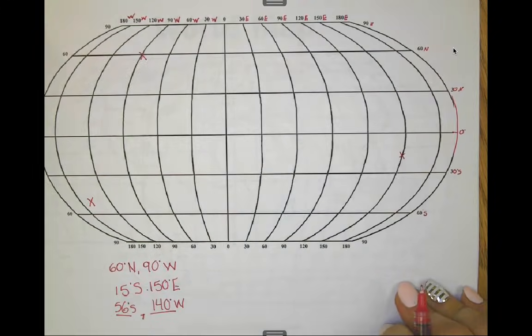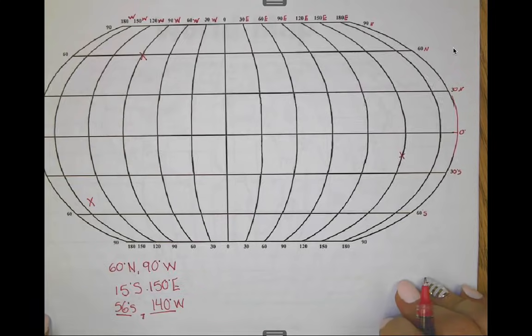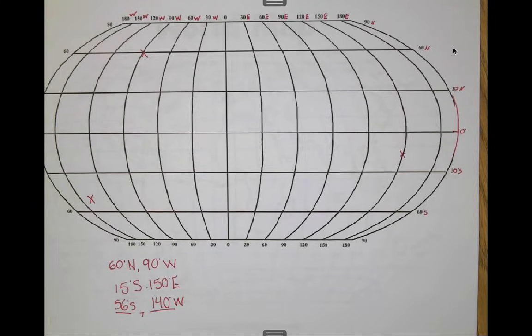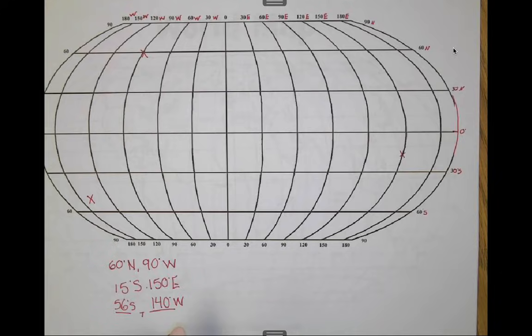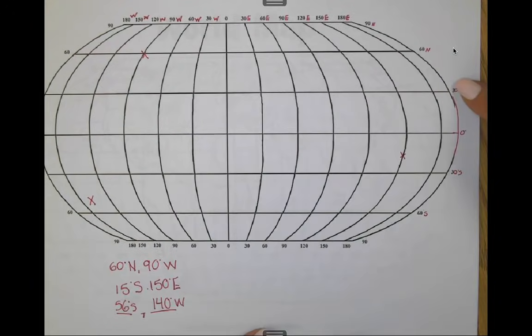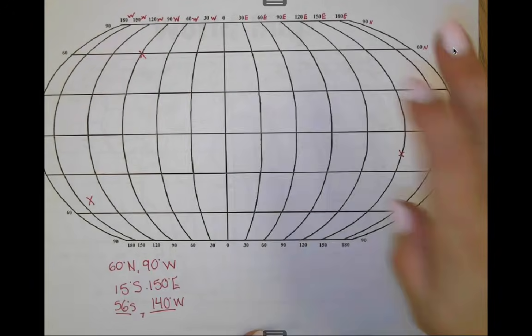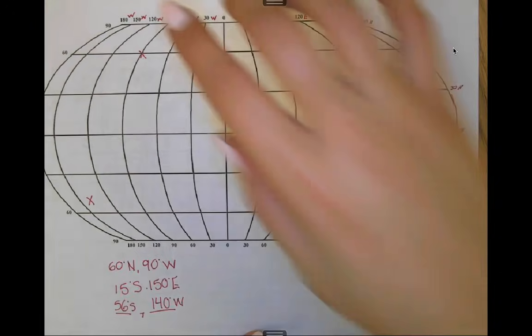Again, it's just taking the time to stop and think: the first coordinate is latitude, the second coordinate is longitude. Ask yourself — am I going north, south, east, or west?